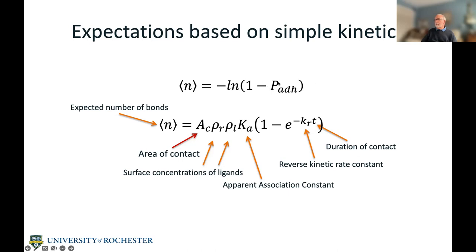The probability of adhesion — which is what we measure — is related to the expected number of bonds in the interface by a kinetic relationship. Using a simple kinetic model, the expected number of bonds should depend on: the area of contact (equivalent to your reaction volume), the concentration of the two ligands on the surface, an apparent association constant, a reverse rate constant, and T, the duration of contact. We can measure T and control the receptor density rho_L and ligand concentration, and then examine how the expected number of bonds relates to duration of contact.